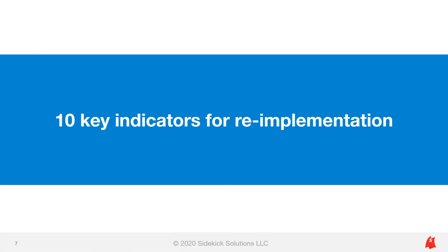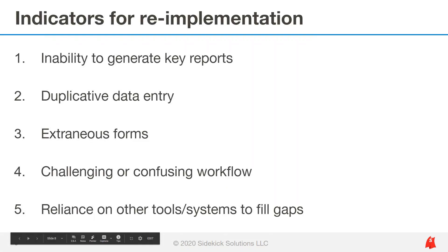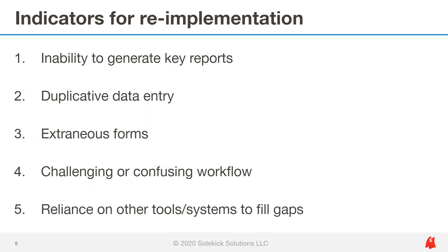There are several indicators of a system redesign need. Here are the top 10. Number one, an inability to generate key reports not due to a training barrier — this oftentimes is the result of linking issues or missing fields. Number two, duplicative data entry: logging the same data in several different locations throughout the system, so not knowing which data is the most current or accurate information.